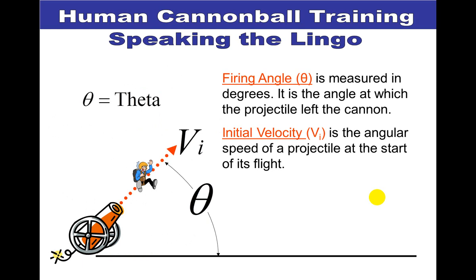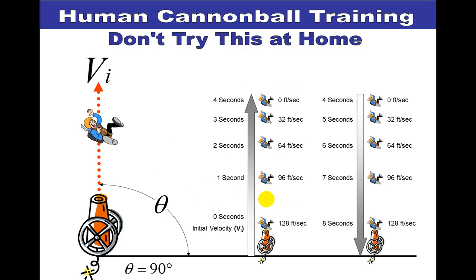Important terms when talking about projectiles: the firing angle is measured in degrees — it's the angle at which the projectile left the cannon or launcher. Initial velocity is the angular speed of a projectile at the start of its flight, meaning with what velocity we launch the projectile. The Greek letter theta (θ) is used to represent angles, and you will see this in your math class as well. Do not try this at home — human cannonball training is not advised.